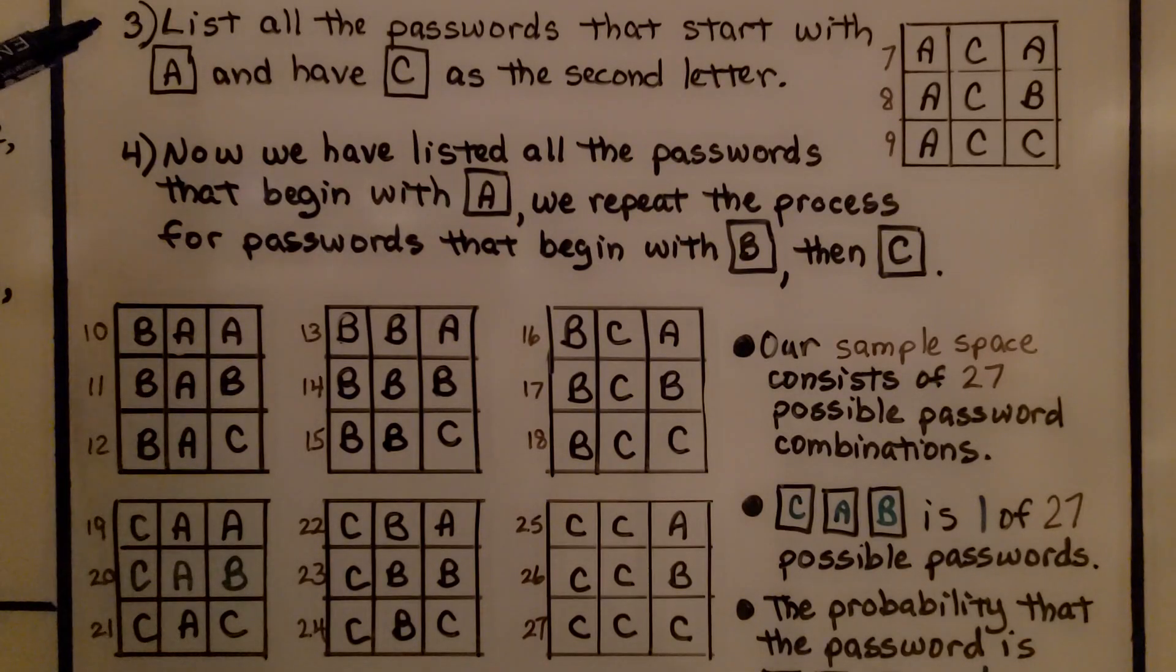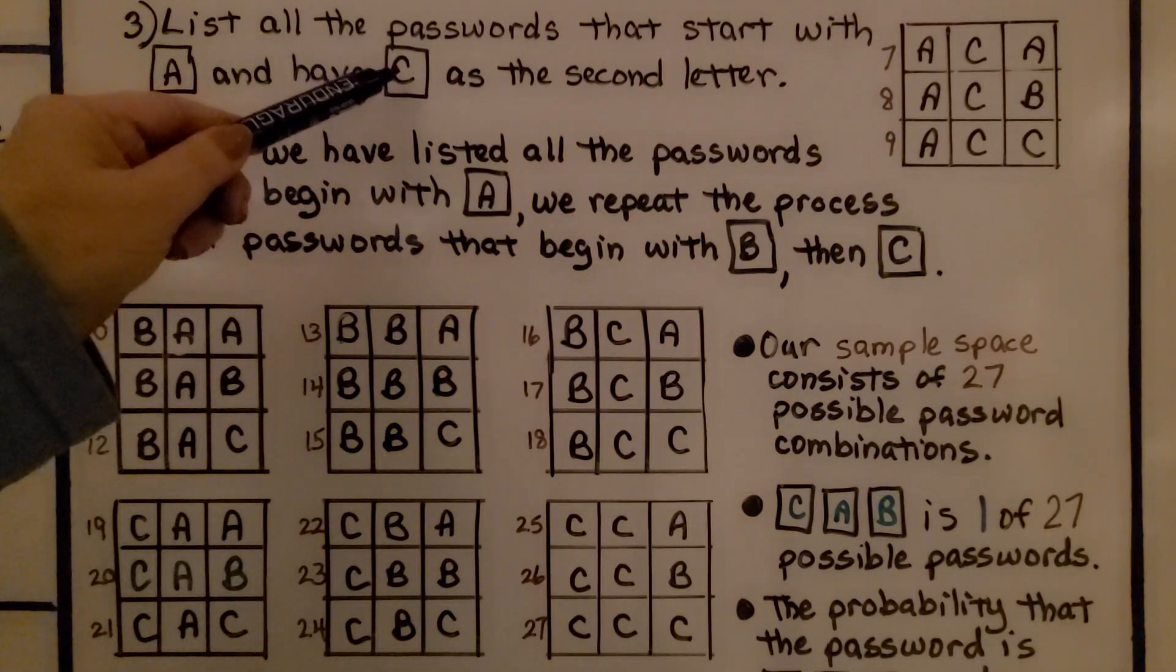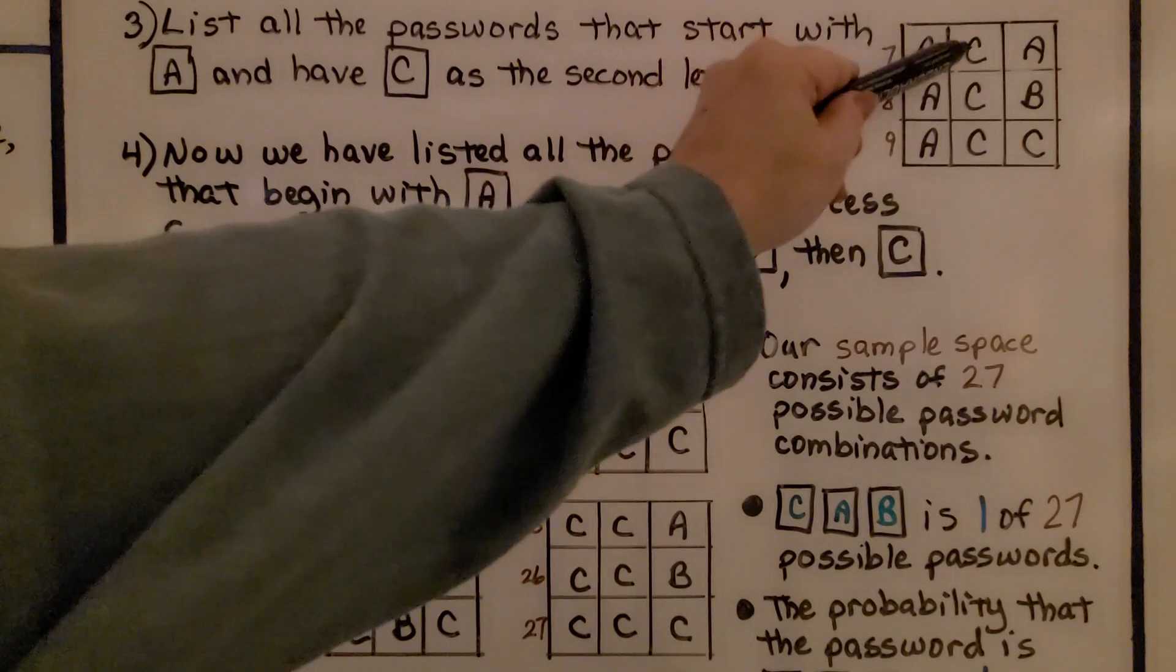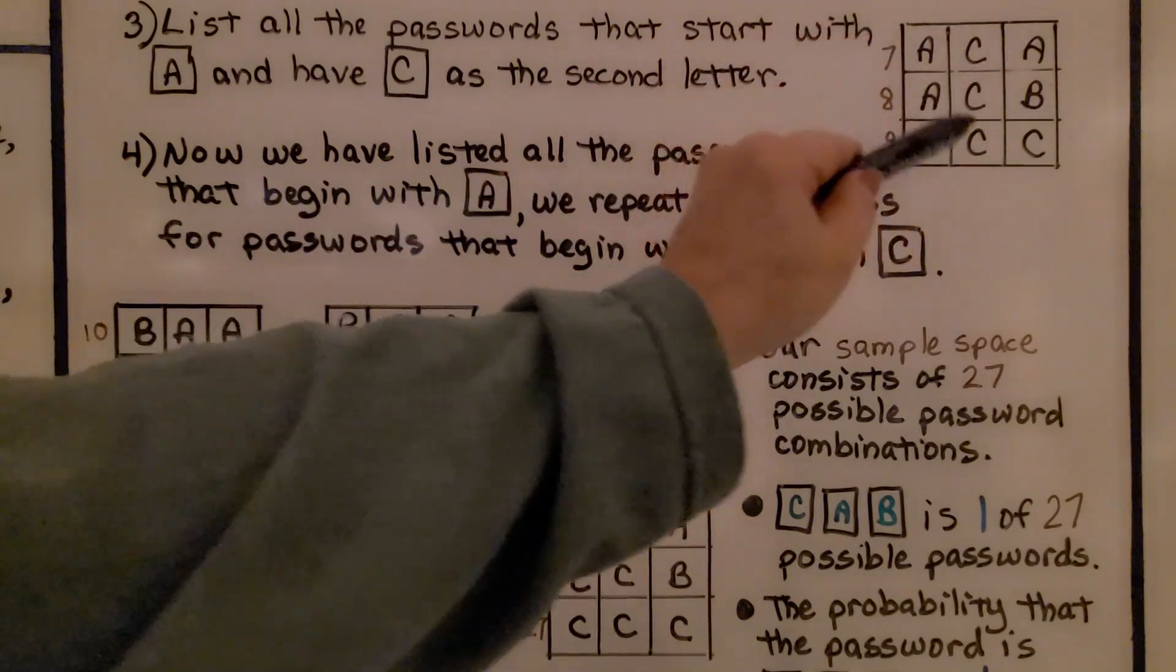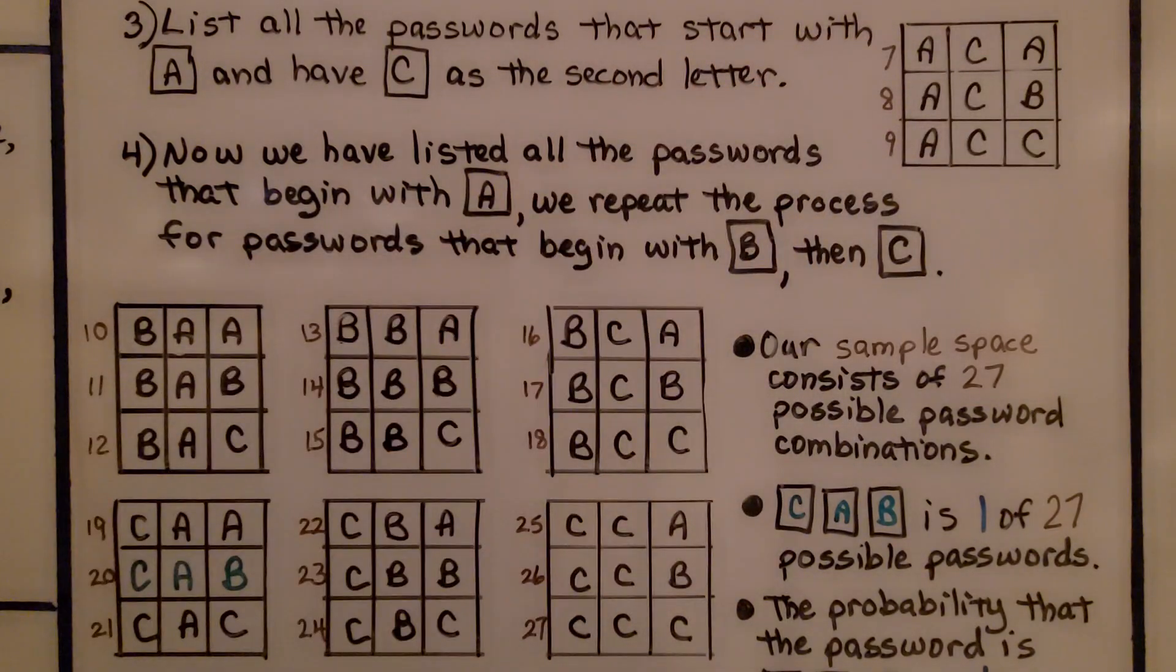The third thing we do is list all the passwords that start with A and have C as the second letter. So, we have A, C, A, A, C, B, A, C, C. Now, we have nine possible passwords.